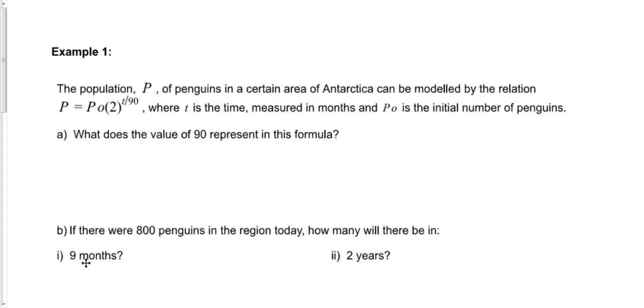It tells us that our population, or P, the final population of penguins of a certain area in Antarctica, can be modeled by the relationship P equals P0 times 2 to the exponent T over 90, where T is the time measured in months, so that's the unit of time that we're using, and P0 is the initial number of penguins.